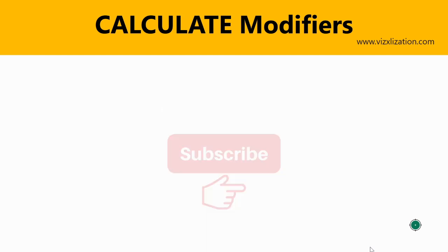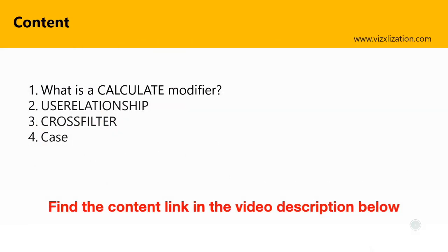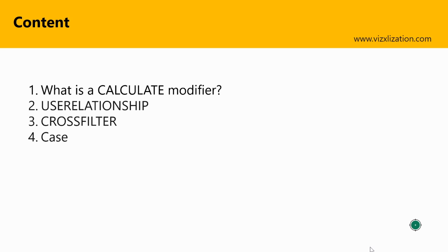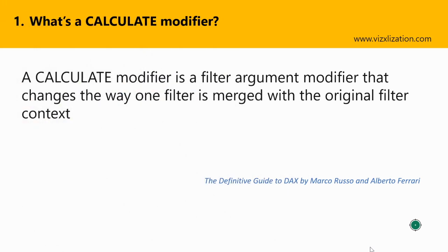For today's tutorial we have four different points. The first point is about calculated modifiers — we're going to learn the concepts. The first modifier we'll look into is USERELATIONSHIP, the second is CROSSFILTER, and finally we have a really nice case where we'll put everything into practice.